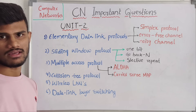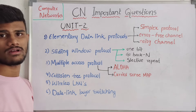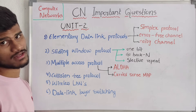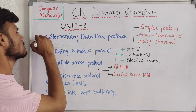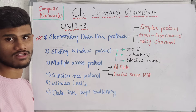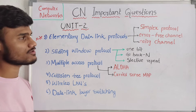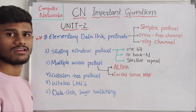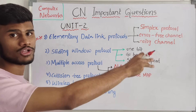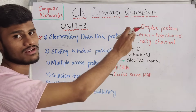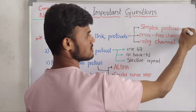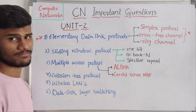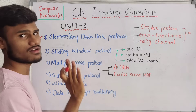Now coming to our second unit. In this second unit we have completely data link layer protocols. The first question is elementary data link layer protocols — there are three types: simplest protocol, error-free channel, and noisy channel. We have three things explained individually. They are individually very very important questions, so don't miss these.